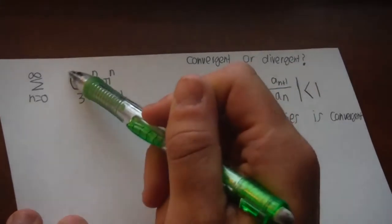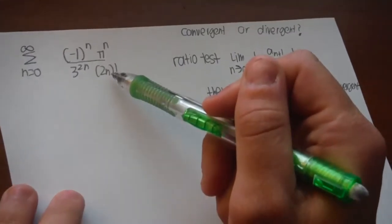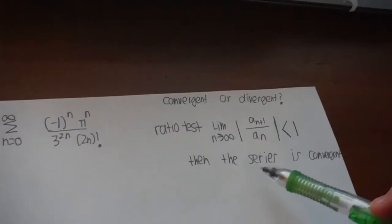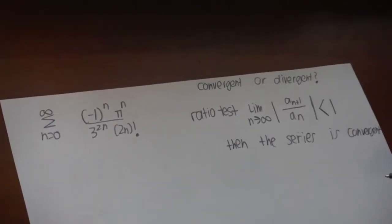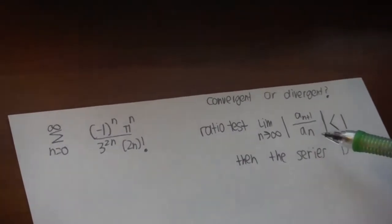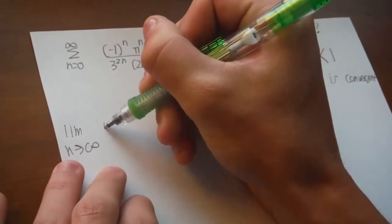So the best way to do this is to use the ratio test, which states that if the limit as n goes to infinity of the absolute value of a to the n plus one over a to the n, meaning that this is a to the n, then the series is convergent.